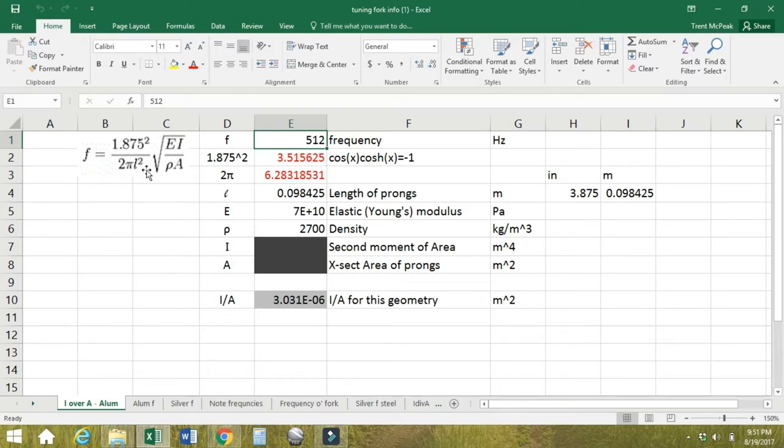So we know the frequency, 1.875 squared is just a number, 2 pi just a number. The length squared in meters - we work in inches, so I put the inches over here and it calculates the meters. Bernie measured it at 3.875 inches. The elastic modulus is 7 times 10 to the 10th, like 70 billion pascals. The density for aluminum is about 2700 kilograms per cubic meter. I've got I and A blacked out here because we know all the other stuff and I'm just going to calculate that ratio of I over A, which for the geometry of this tuning fork is 3.031 times 10 to the minus 6.